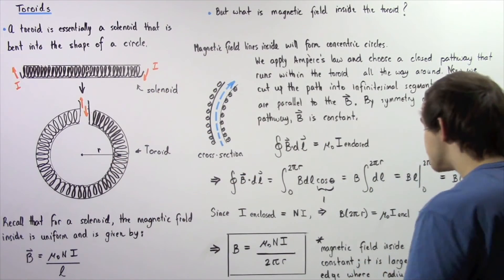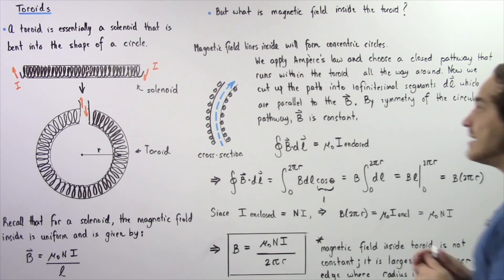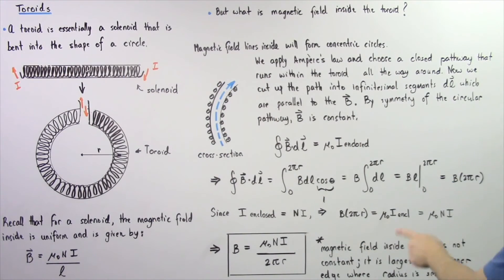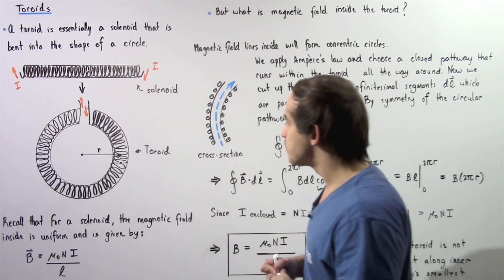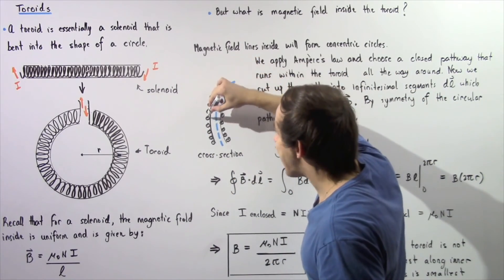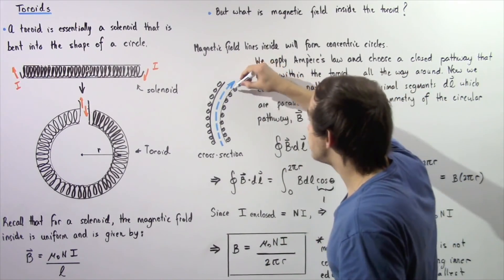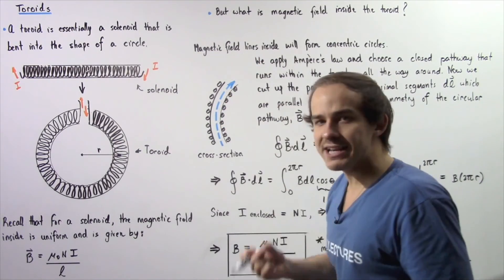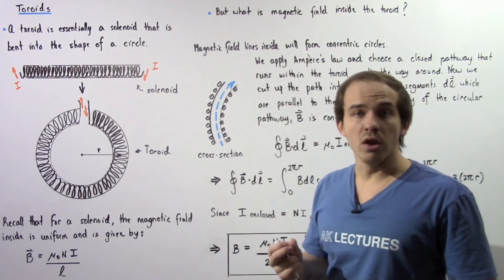Notice that the magnetic field inside the toroid is not constant like it is inside the solenoid — it depends on the radius r we choose. It is largest along the inner edge where the radius is smallest, and smallest along the outer edge where the radius is largest. At points closest to the outer edge, r is largest and B is smallest. Likewise, at points closer to the inner edge, the magnetic field is largest because the chosen r is smallest.